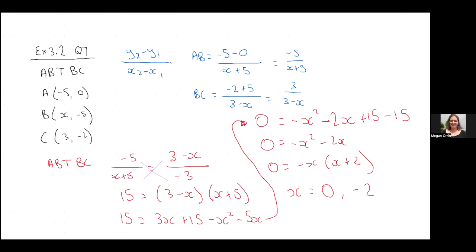If you weren't sure if that was true you could put these back into these equations and see. In fact, why don't we just do that. So I'm going to put zero into this. So this is negative 5 over zero plus 5. So that's negative 1.